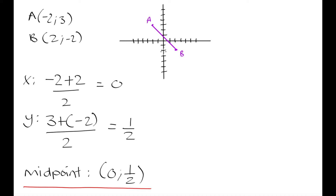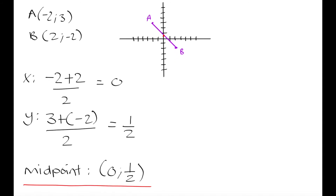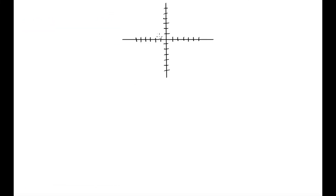Let's find that on our plane. Here we have x equals 0 and y equals one-half. It might look like the midpoint is slightly off the line, but that's just because I've drawn this plane by hand so the notches are not perfectly equally spaced. If they were perfectly spaced, this point would fall directly on the line joining A to B. Let's go over one more example to solidify this. Our first point A is where x equals negative 3 and y equals 5, and point B is where x equals 4 and y equals 1.